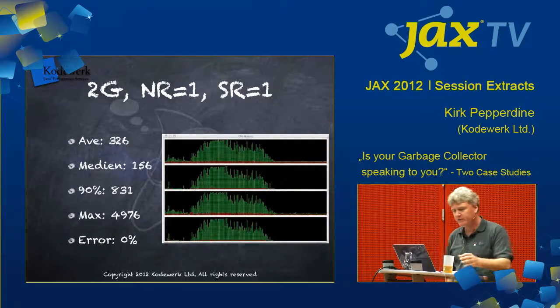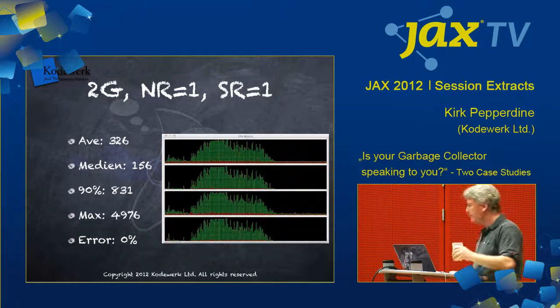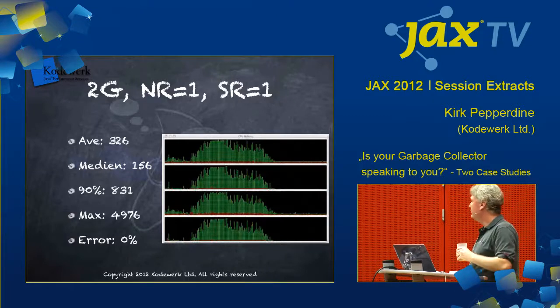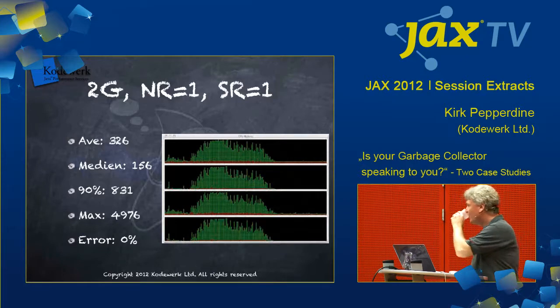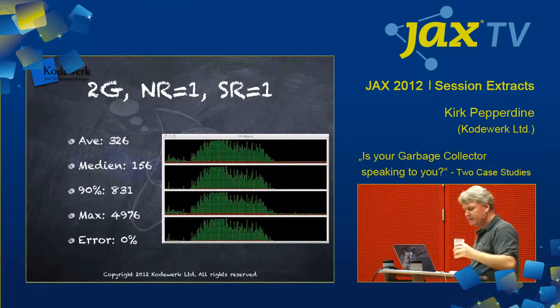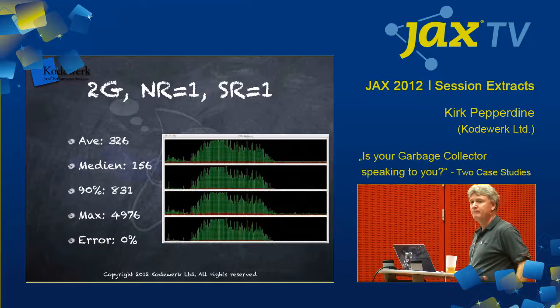What happens if we just give this thing two gigs of RAM with a new ratio and a survivor ratio setting like that? Again, more RAM made things worse.